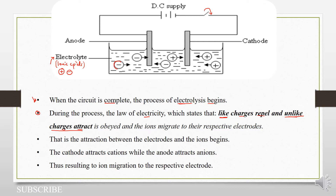we have some negatively charged ions — this could be chloride ions — and then we have positively charged ions as well, this could be for example sodium ions.